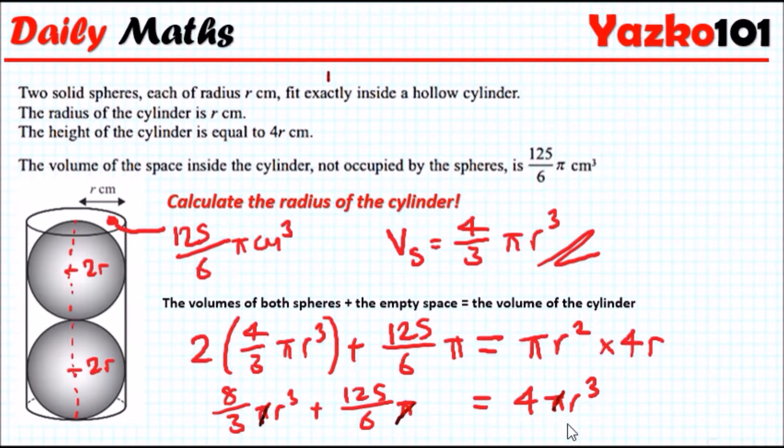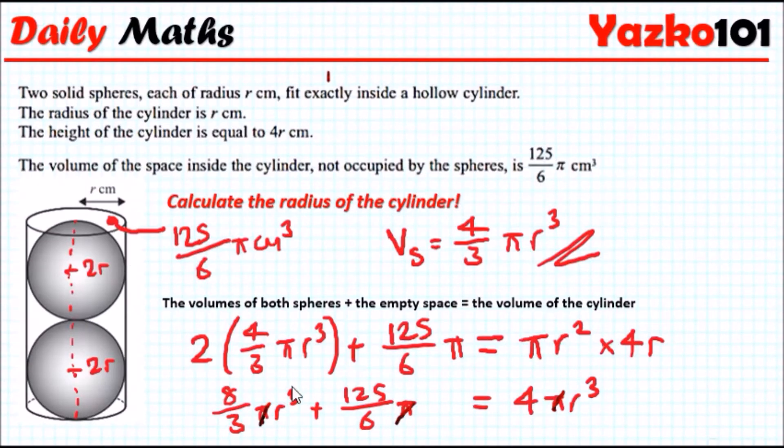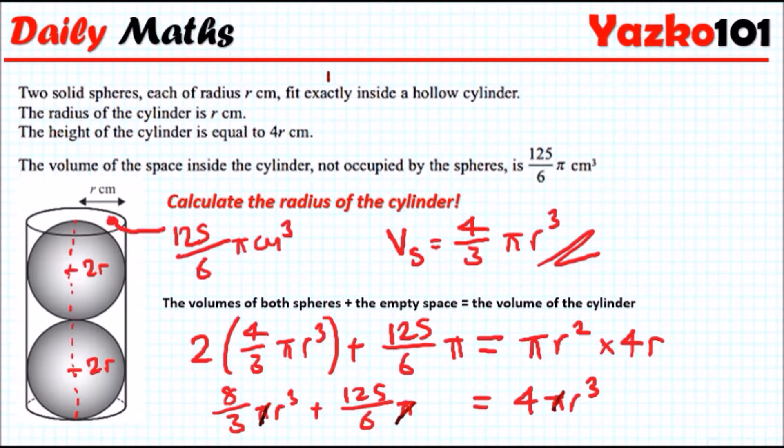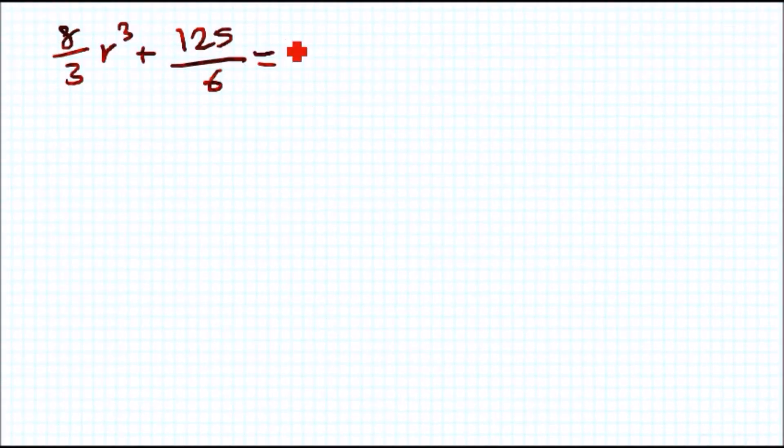Now we can solve in terms of r cubed. Let me get a fresh page for this. So we're going to have a new equation: 8 over 3 r cubed plus 125 over 6 must equal 4 r cubed.